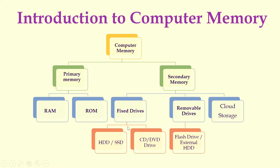In fixed drives, we have hard disk drive, solid-state drive, compact disk, DVD — digital video disk or digital versatile disk — as well as flash and external drives as examples of removable drives. Once again, computer memory is divided into primary memory and secondary memory. Primary memory has RAM and ROM. Secondary memory has fixed drives, removable drives, and cloud storage.